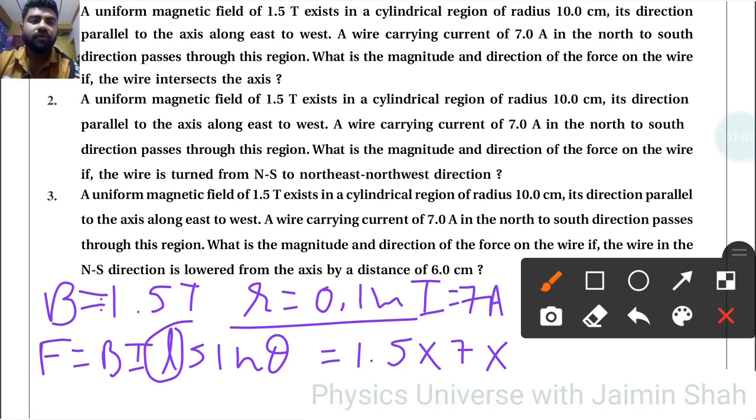So 2 into R, so 2 into R is 0.2. So here answer will come 1.5 into 7 into 0.2, so that is 2.1, and now into sine theta.